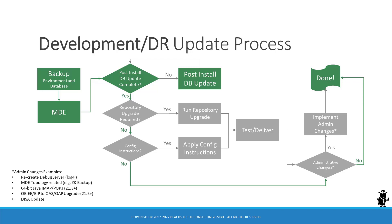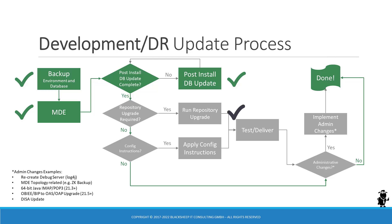Here we can see the update process for development environments, where the fast track to a successful update is as follows: take a backup, run the MDE, run the post-install database update. If you have no repository upgrades, configuration instructions, or administrative changes to implement, you're done. If you need to execute the non-mandatory repository upgrade or apply configuration instructions, you have to do that in the development environment and test and deliver these changes. If you have any administrative changes on your to-do list, you have to implement them as well before declaring success.